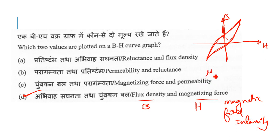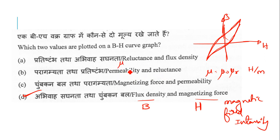Permeability means mu — mu naught into mu r — and it is measured in Henry per meter. The options of permeability and reluctance do not form the BH curve. Magnetic reluctance is a different concept, and reluctance versus magnetic flux density is not a recognized curve. So the right answer is magnetic flux density and magnetizing force.